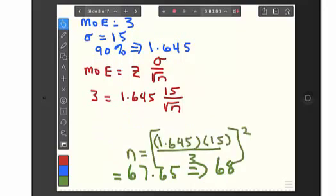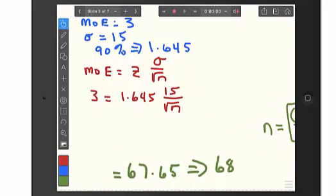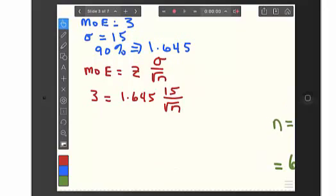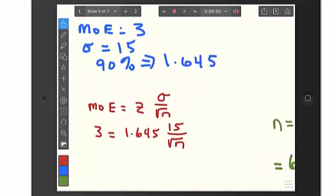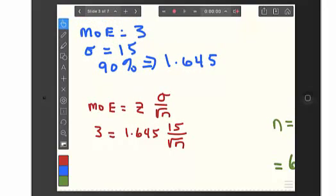So, at the top there, we have, I'll clear this up a little bit from the clutter. That was the information we just had. Margin of error is three. Population standard deviation, 15. And then, this 90% confidence level means that we'll have a z of 1.645.